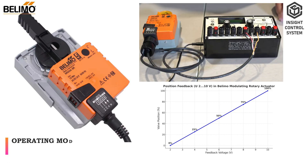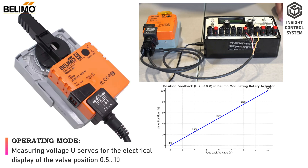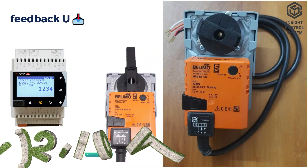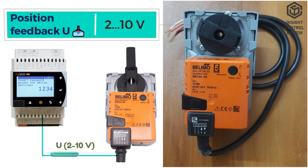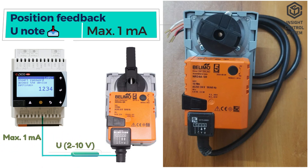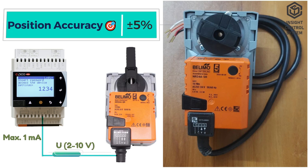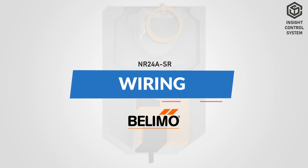The measuring voltage serves for the electrical display of the valve position from 0.5 to 100%, and as a control signal for other actuators. Position feedback is 2 to 10V. Position feedback load is maximum 1 mA. Position accuracy is ±5%.